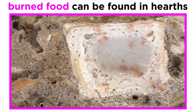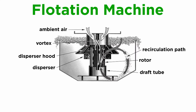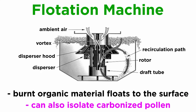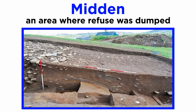Burned food is also commonly found in residential hearths. Archaeologists can scoop the ash and charcoal and place it in a flotation machine, which causes burnt organic material like bone and grain kernels to float to the surface. We can even get carbonized pollen from flotation machines, further helping in environmental reconstruction.